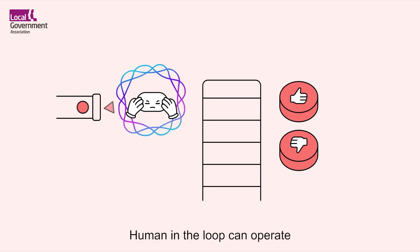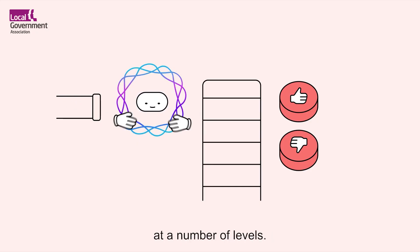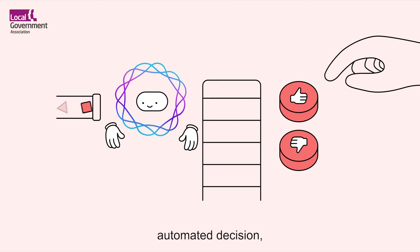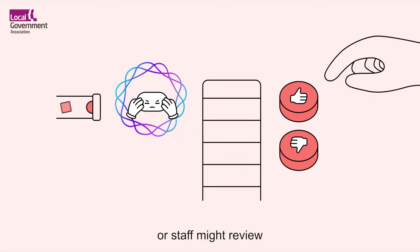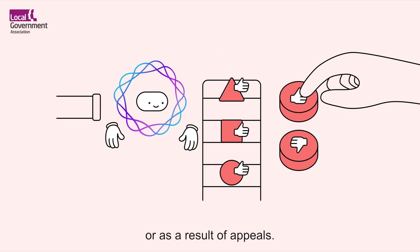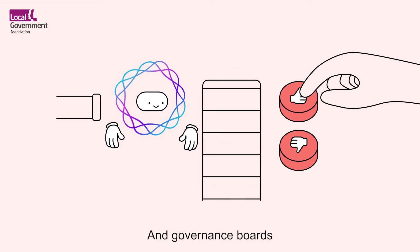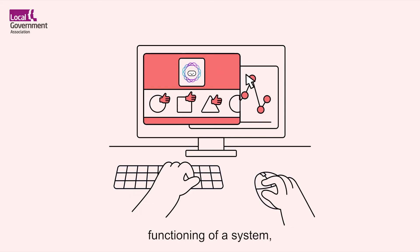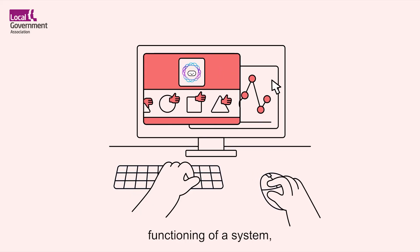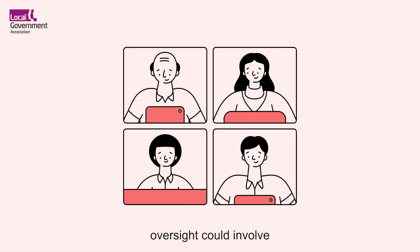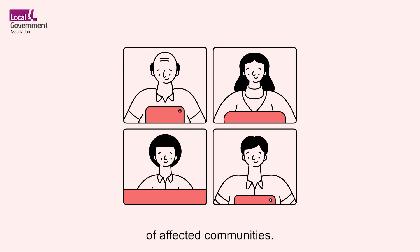Human in the loop can operate at a number of levels. Staff might be involved in approving each individual automated decision, or staff might review a selection of decisions selected randomly or as a result of appeals. Governance boards may provide regular human oversight of the overall functioning of a system, looking at trends and patterns. This kind of governance oversight could involve different stakeholders, including representatives of affected communities.